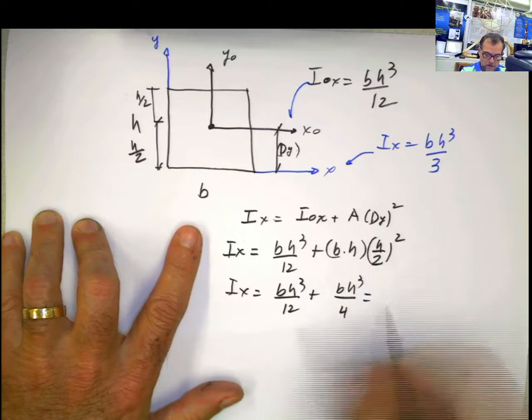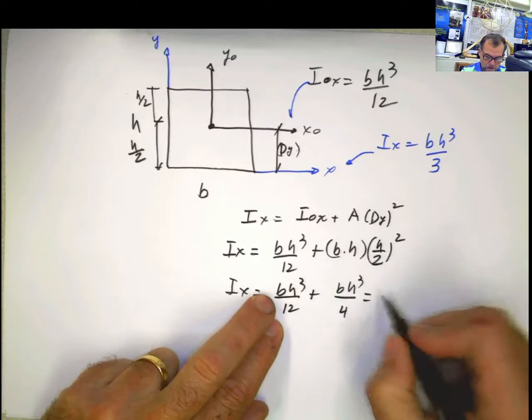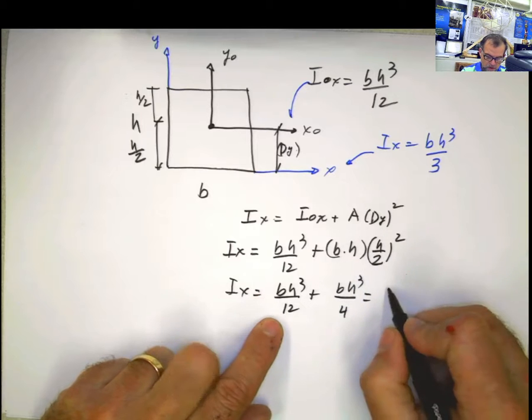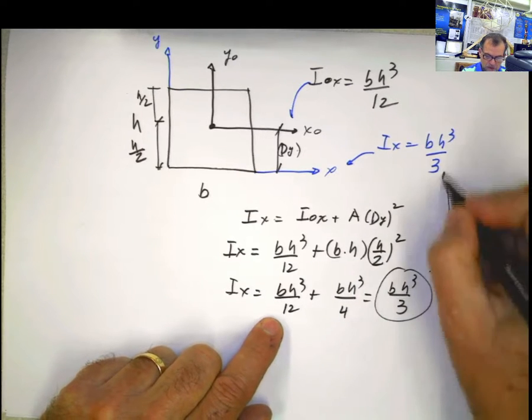And when you solve for this, this is going to be 12 here, 4 divided by 12 is 1 third, so bh cubed divided by 3, which is what we did before.